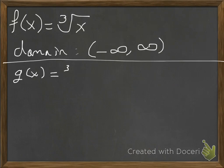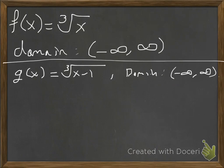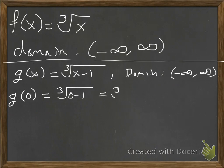Let's practice with g of x equals the cube root of x minus 1. The domain is everything — negative infinity to infinity. For instance, g of 0 is the cube root of 0 minus 1, which is the cube root of negative 1, which equals negative 1, since negative 1 times negative 1 times negative 1 is still negative 1.